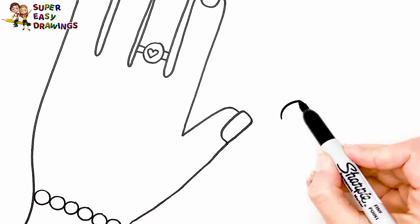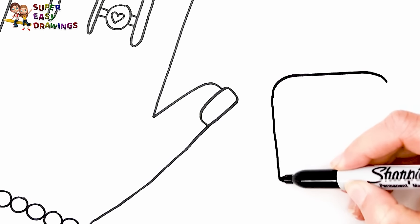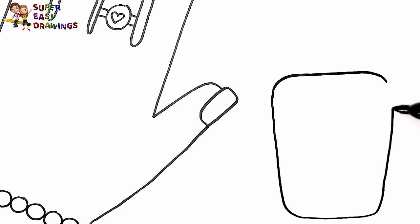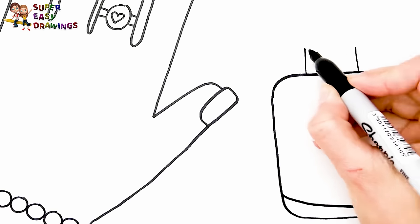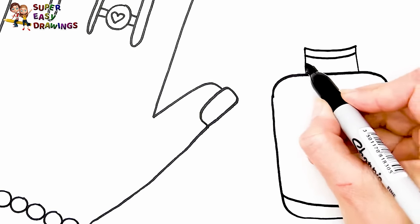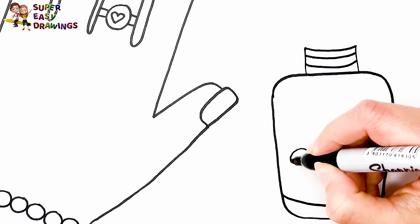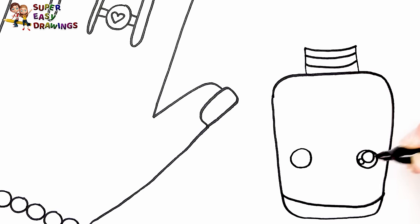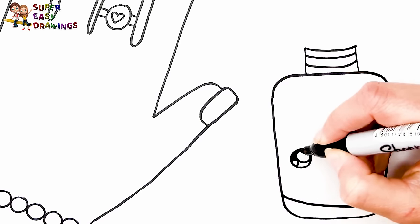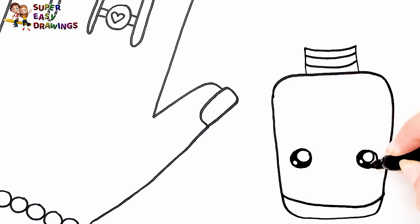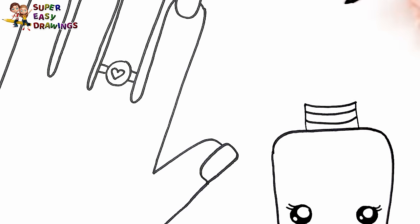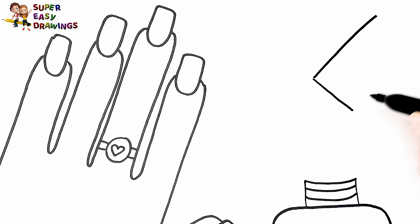Now I'm going to draw nail polish. I start with the container. Now let's draw a cute face for it. I draw her eyes and her smiling mouth. Now I draw the brush too.